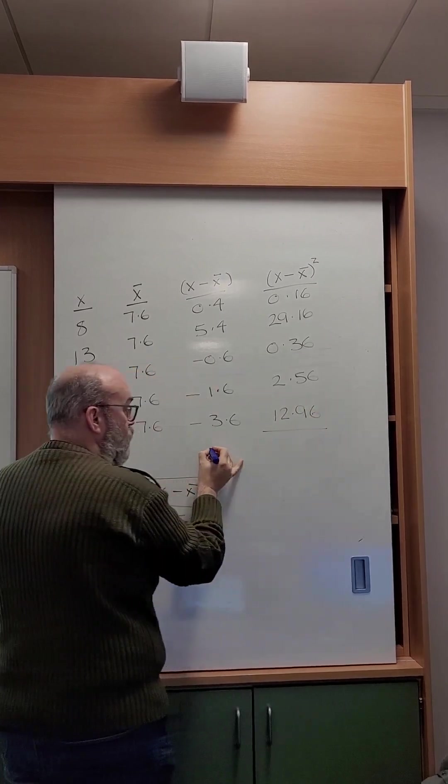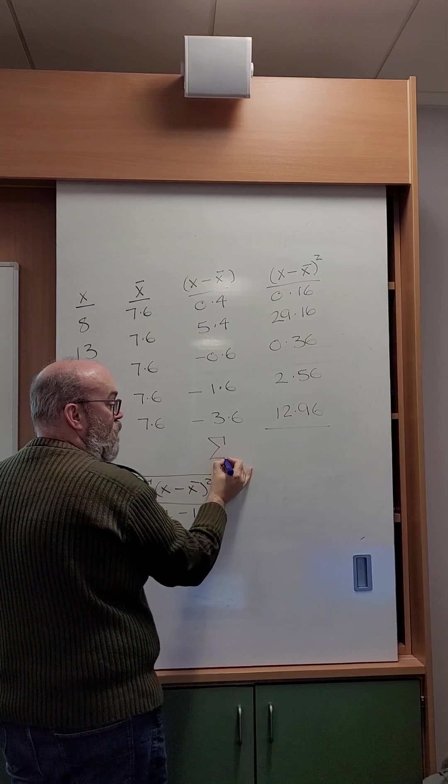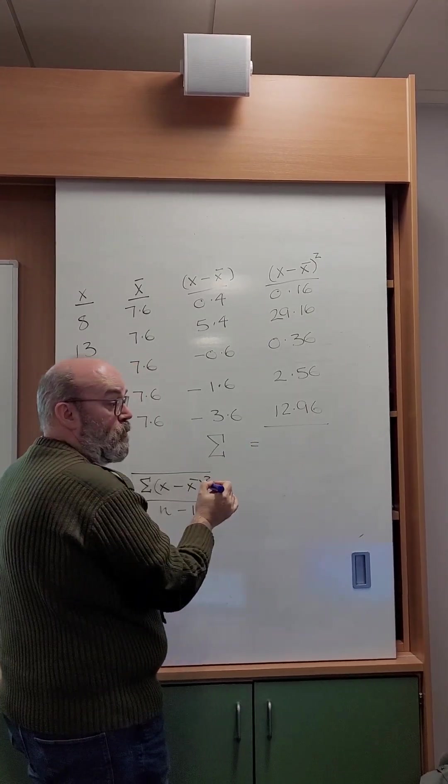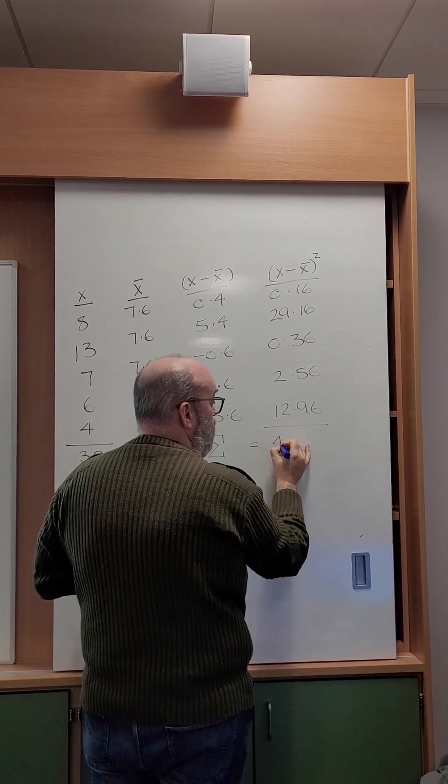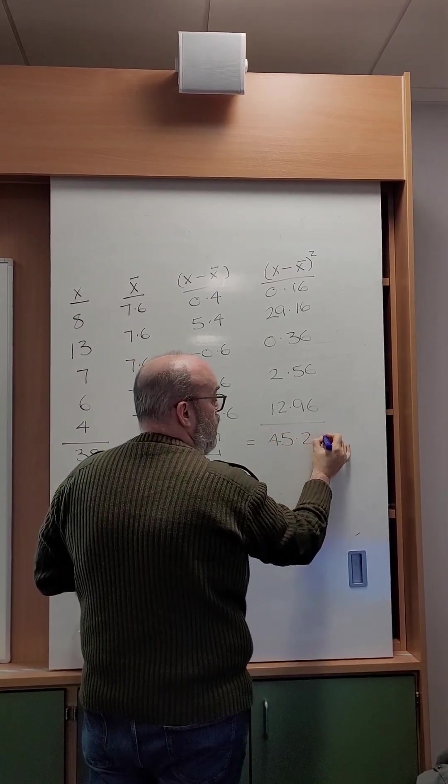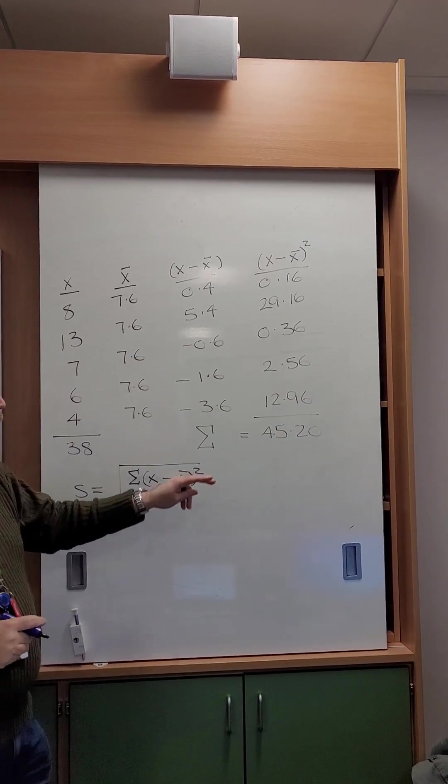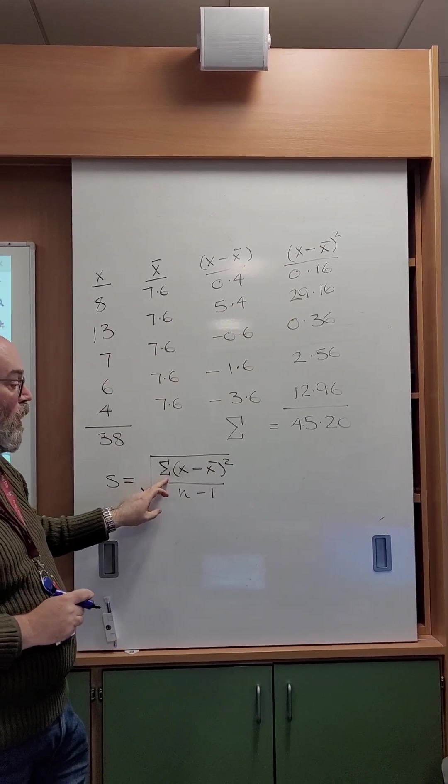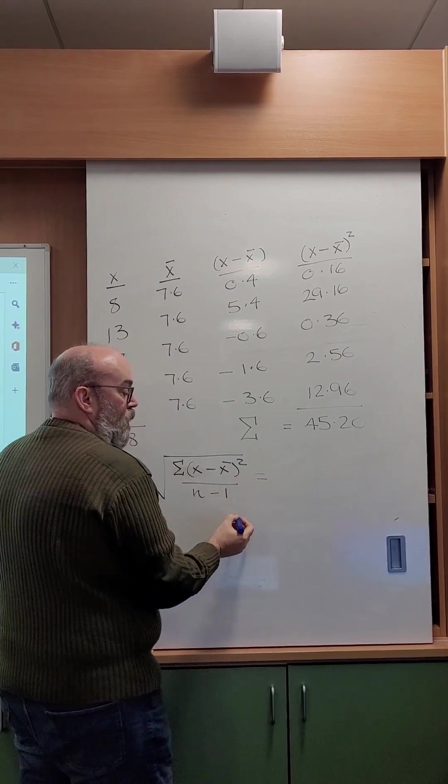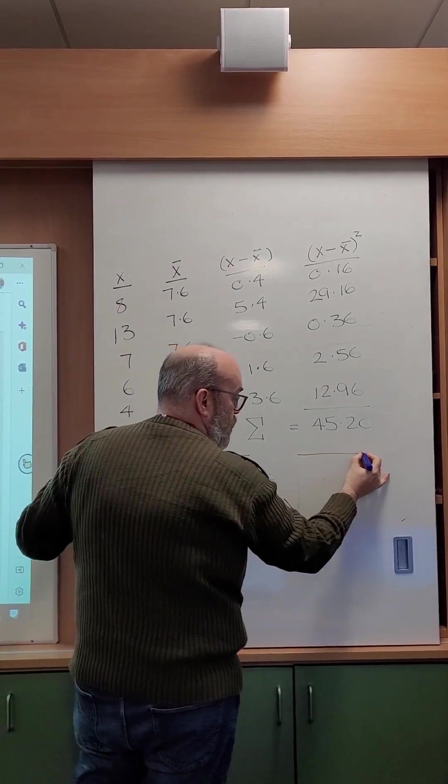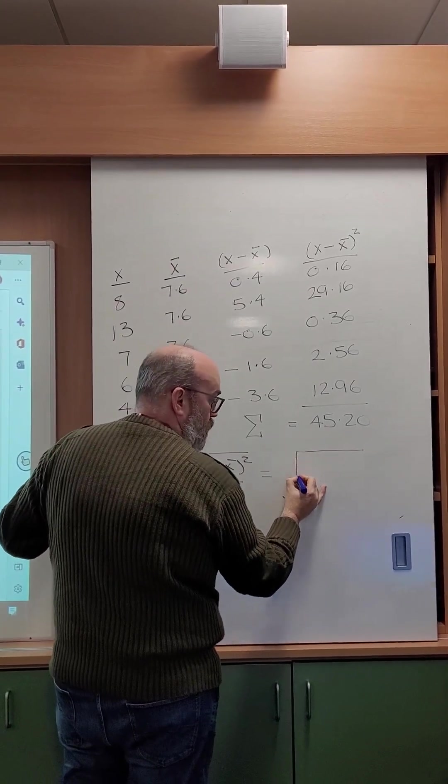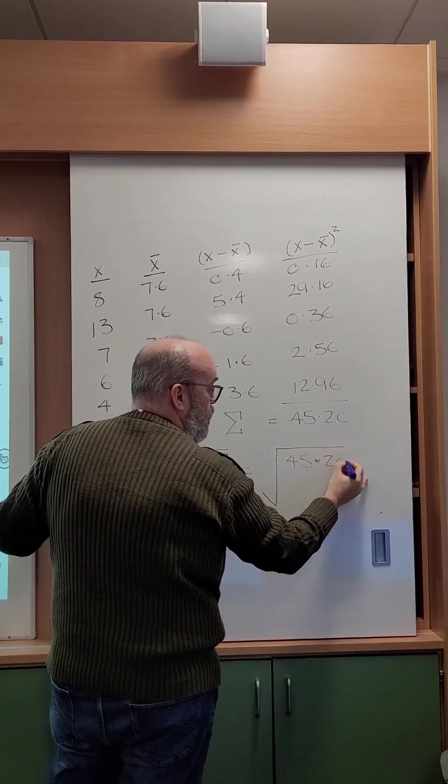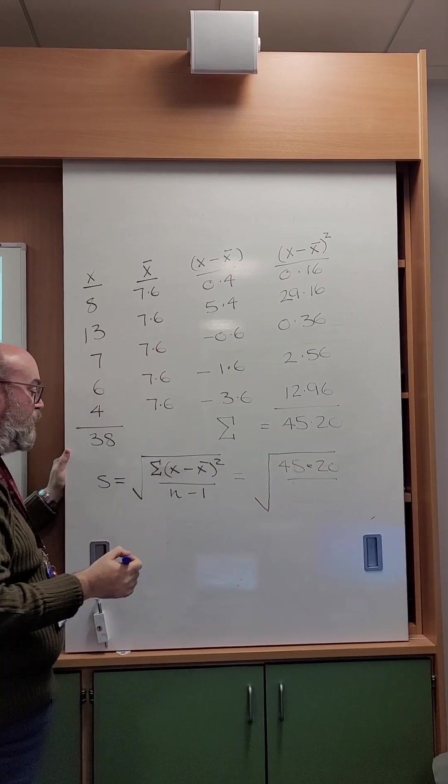We then total these up. In other words, we take the sum of those values, and that's going to give me a total of 45.20, which if you notice is the sum of this column, so therefore that's the top line of this formula. So that's going to be the square root of 45.20 all over N minus 1.